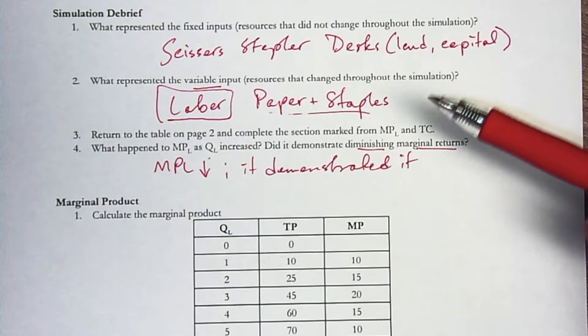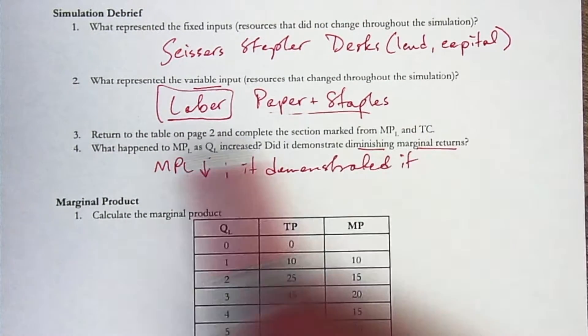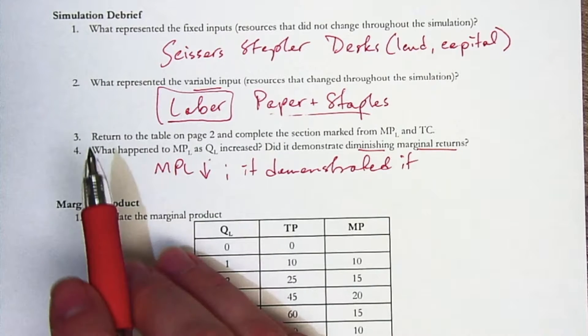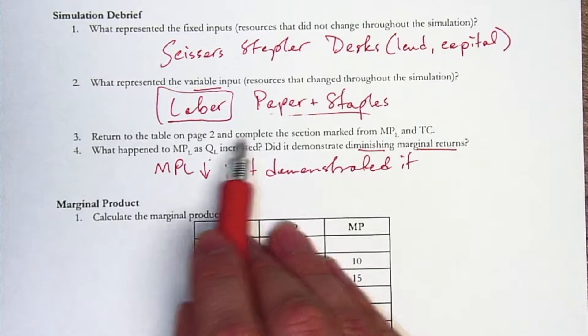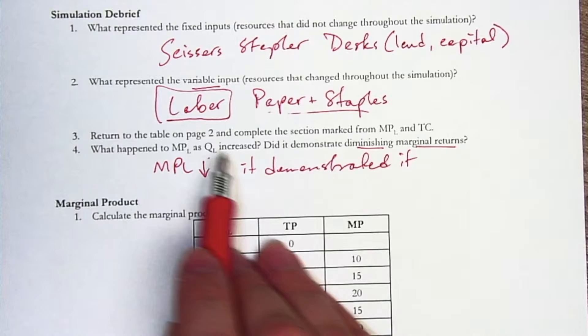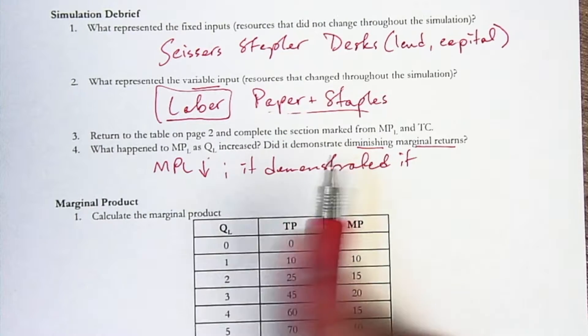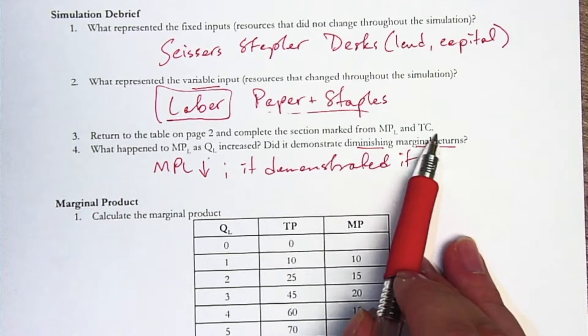So we're going to quickly talk through some practice problems. The first few of them actually depend on you having done the simulation in class, and we're going to take a look in just a second at the data table that's on page 2 in the packet that we got in class, and complete the section from MPL to TC.